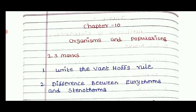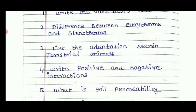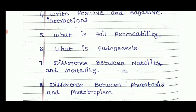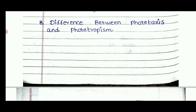For Chapter 10, Organisms and Population, 2-mark and 3-mark questions include: write Allen's rule; difference between eurytherms and stenotherms; describe adaptations in terrestrial animals; write positive and negative interactions; what is soil permeability; what is pedogenesis; difference between natality and mortality; and difference between phototaxis and phototropism.